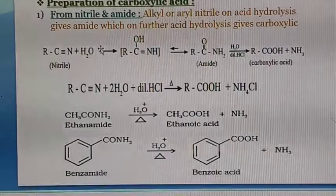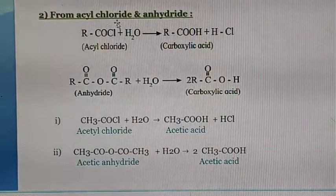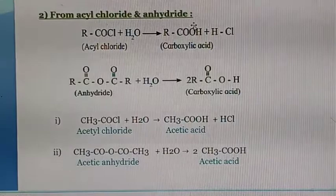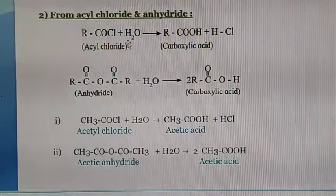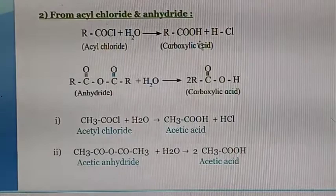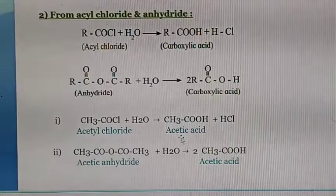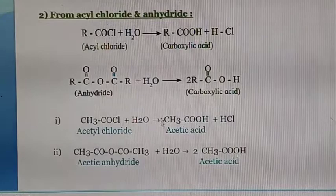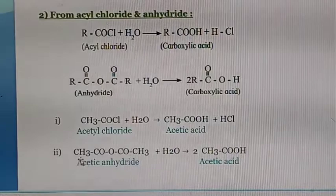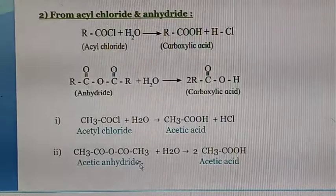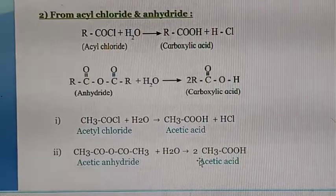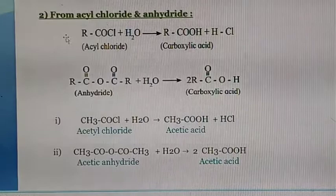Next method is from acyl chloride and anhydride. Acyl chloride means RCOCl. When it is hydrolyzed it gives the corresponding product RCOOH plus HCl. For example, if CH₃COCl (acetyl chloride) is hydrolyzed it gives acetic acid with formation of HCl. From acetic anhydride (CH₃CO–O–COCH₃), hydrolysis gives two molecules of acetic acid.